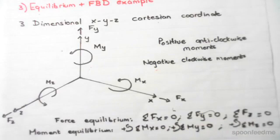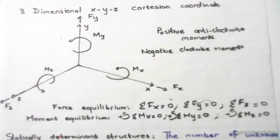To do a moment equilibrium, we do the sum of moments about x is equal to zero, the sum of moments about y is equal to zero, and the sum of moments about z is equal to zero.